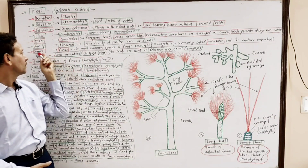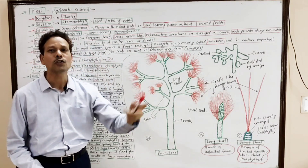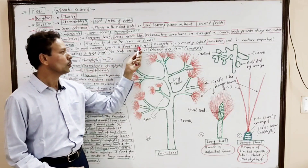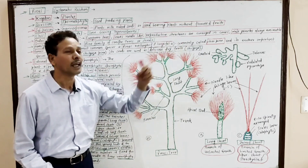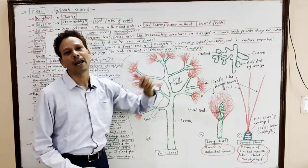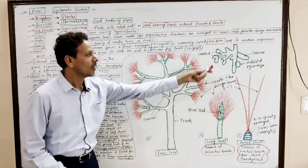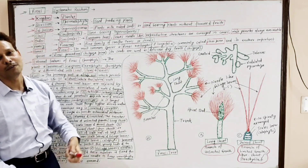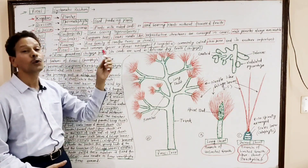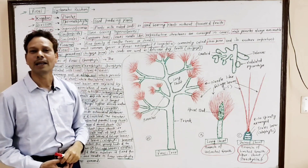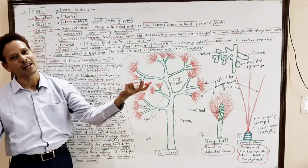Family Pinaceae — the pine family of conifer trees or shrubs. Genus Pinus. Two most common species are Pinus roxburghii, also called Pinus longifolia, commonly named chir pine or 'chid' tree in Hindi. Another important species is Pinus gerardiana, the chilgoza pine, whose seeds are commonly used as delicious dry fruits.